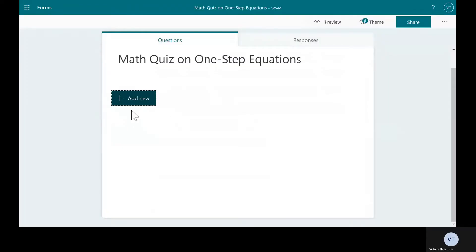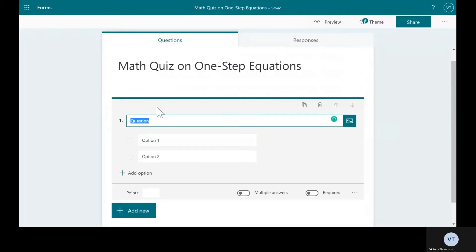So right now I'm in Microsoft Forms and the first thing I'm going to do is select Add New. When I select Add New, an array of different questions I can have for my students will show up, and I'm going to select Choice. We'll make this multiple choice today.